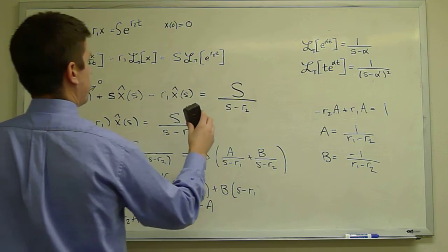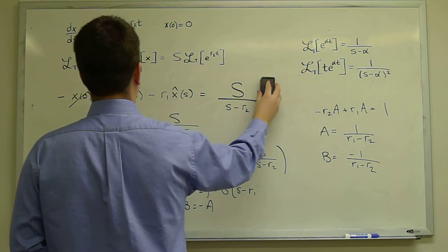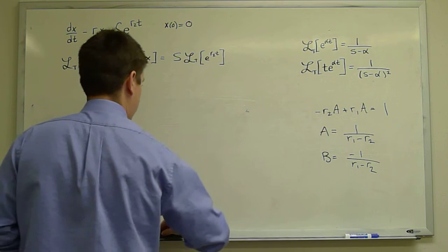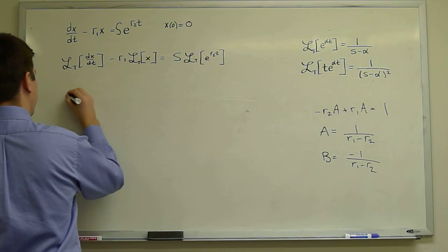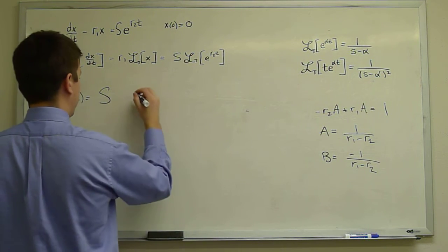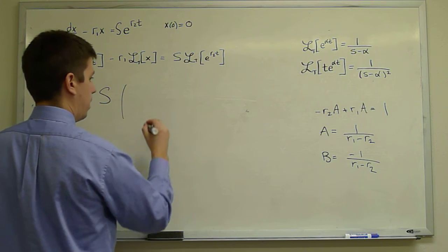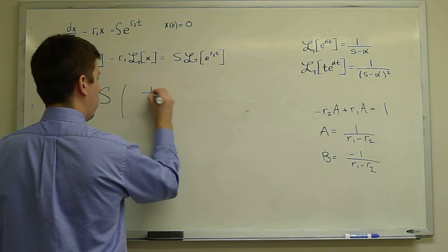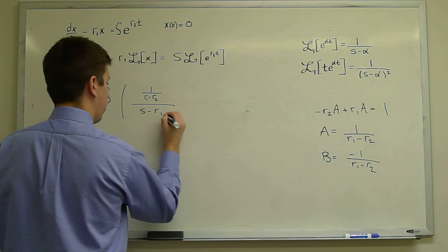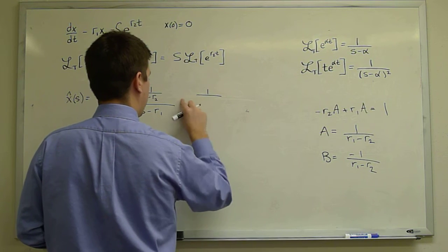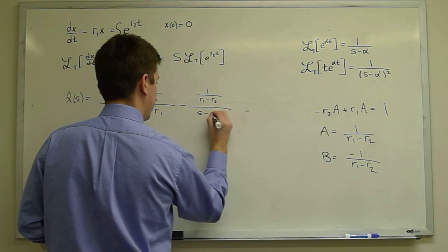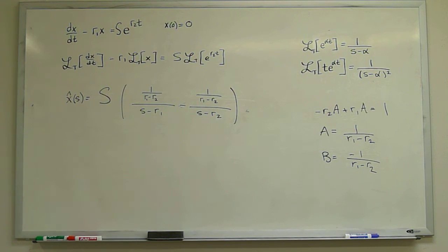So where does that leave us? That leaves us with x̂(S) equals capital S times [1/(R1 minus R2)] over (S minus R1) plus [minus 1/(R1 minus R2)] over (S minus R2). That took a while, but now we're basically done.